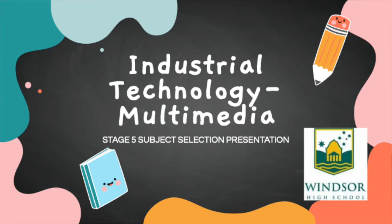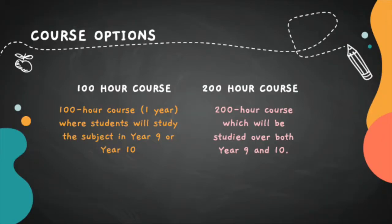Welcome to the Industrial Technology Multimedia Stage 5 Subject Selection Presentation. Multimedia is offered as a 100-hour course for Year 9 or 10, or a 200-hour course over the two years.